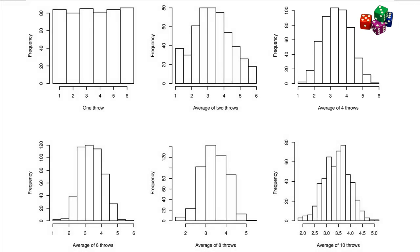I can do this for averaging over 6, 8, or 10 throws, and each of these histograms are shown here in the bottom row.